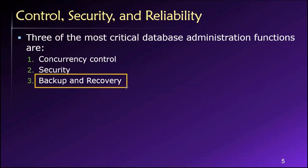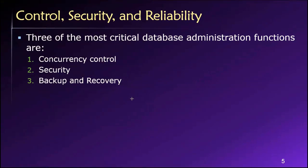The third major critical database administration function is backup and recovery. Data are very, very valuable, so we want to have a way of recovering from a disaster. We hope it will never happen — no one spilling coffee on the database server, no earthquake, fire, tornado, hurricane, or flood — but any of these things could potentially destroy our data. We need a way of recovering so that the organization can continue on and move forward. These are the three critical database administration functions we will explore in this part of our class.